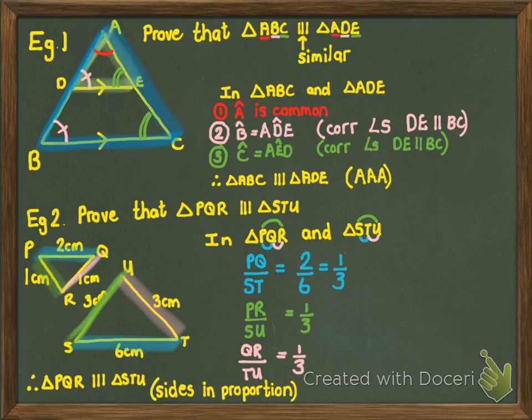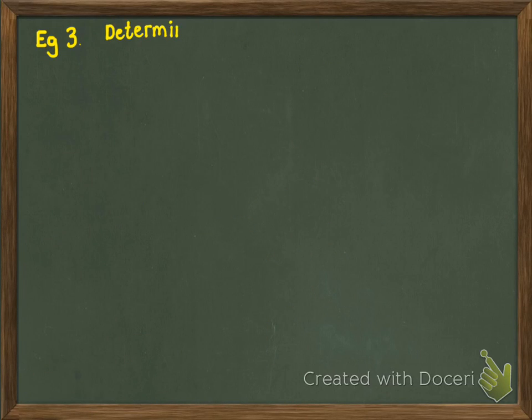Example two is not a very common way to ask similarity, especially in grade 10. Example one — using angle, angle, angle — is the most common way. Now let's look at example three, which is a common grade 10 question.